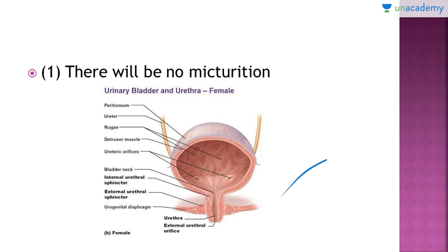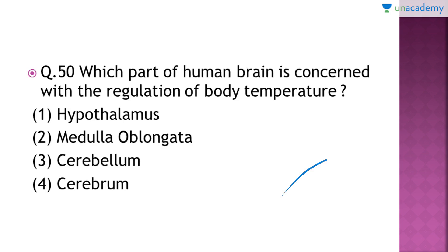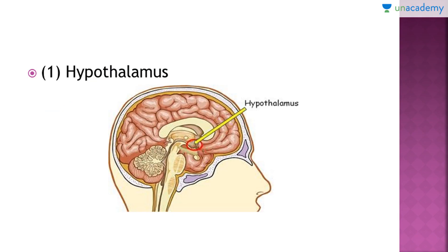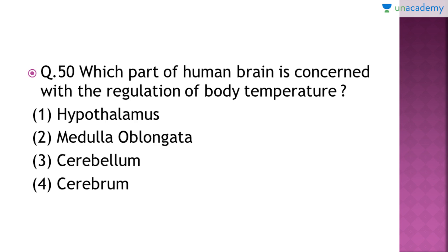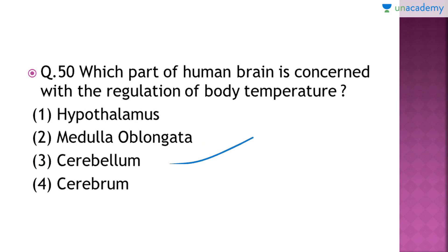Question number 50: which part of the human brain is concerned with the regulation of body temperature? The right answer is option number one — the hypothalamus. Here you can see where the hypothalamus is located in the brain. The medulla oblongata has control centers for various systems such as the respiratory and digestive systems.